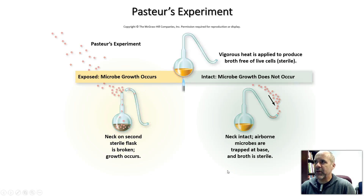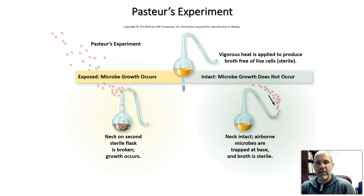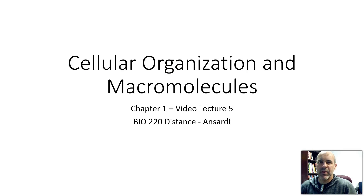That finally answered the question: there is no spontaneous generation of life. All life forms on the planet today come from previously existing living things. Living things do not appear from non-living matter — and that includes microorganisms and organisms that we can see with the naked eye.